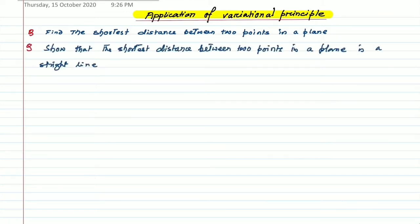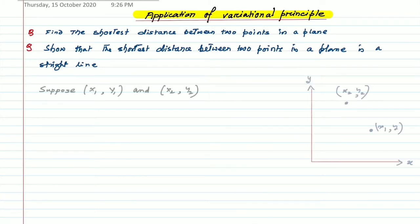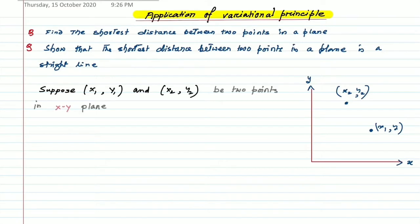The same question can be asked in two different ways. First: find the shortest distance between two points in a plane. Or it may be asked: show that the shortest distance between two points in a plane is a straight line. Now let us solve this. Suppose (x1, y1) and (x2, y2) are two points in the xy plane as shown in the figure.